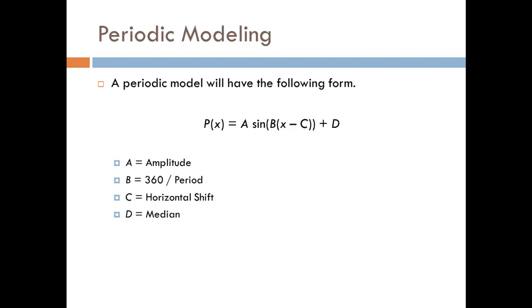If you remember, a periodic model has the form A times the sine of the quantity B times the quantity X minus C, close the quantities, plus D. A was the amplitude, which told us how high or how tall the graph was. B was related to the period, so that represented how wide it was. C was a horizontal shift, so it moved it left and right. And D was the median, which was the middle value of the data. It also represented a vertical shift.